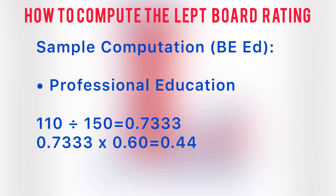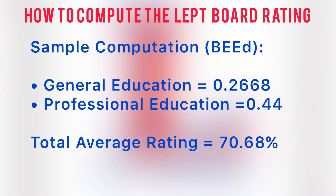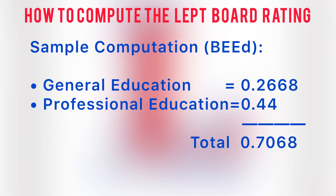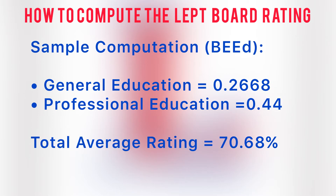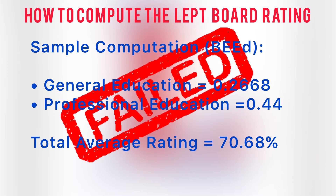Add the computed rating for general education, which is 0.2668, and professional education, which is 0.44, to get 0.7068. Multiply by 100 to get the percentage of 70.68%. This rating is failed.